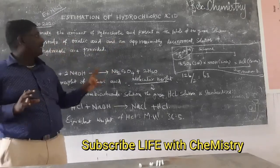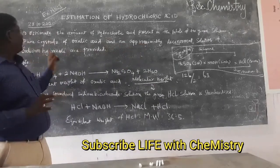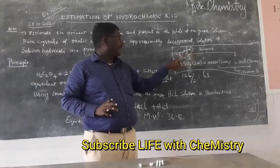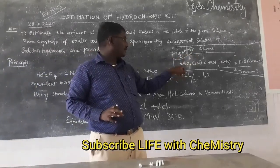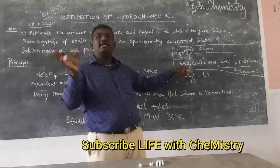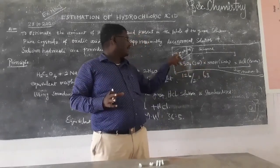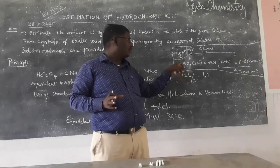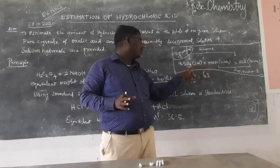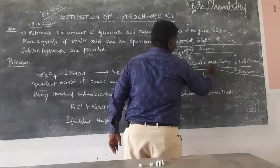The pure crystals of oxalic acid and the approximate decimolar solution of sodium hydroxide are provided. Titration 1: the oxalic acid formula is H2C2O4. This is the standard solution of sodium hydroxide. This is a weak acid versus strong base titration. Reaction 1 involves the weak acid oxalic acid and the strong base sodium hydroxide.